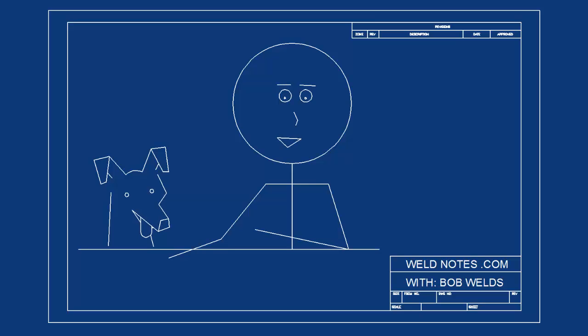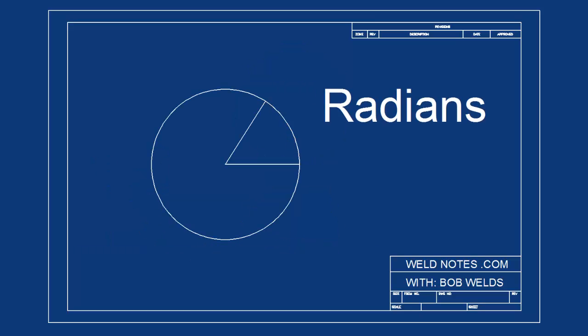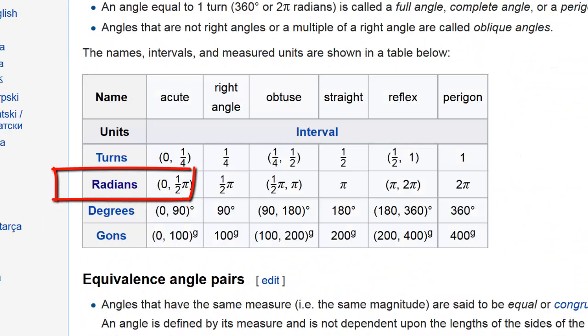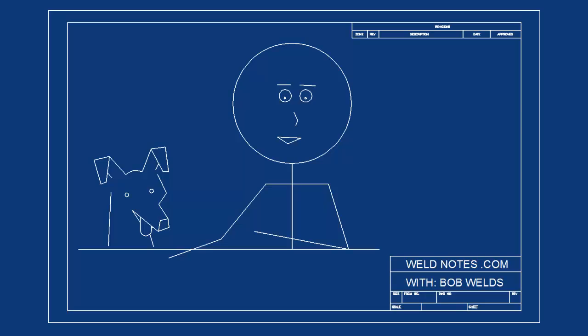Hi, I'm Bob Welds and this is a look at radians. A radian is a unit of measurement for angles. Now you're probably used to using degrees to measure angles, but there are other ways to talk about how big an angle is. Let me start by showing you what a radian is.